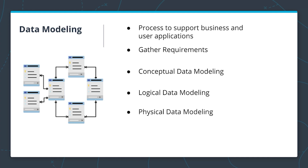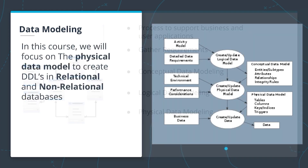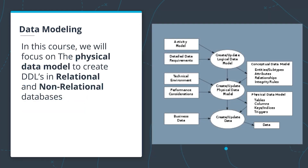From there, physical data modeling is done, transforming the logical data model to the database's data definition language, or DDL, to be able to create the databases, the tables, and the schemas. Now we need to start writing code. We'll be writing our DDLs to create tables in the way that the database understands. Every database does this about 99% the same, but always with a few tweaks — you'll need to Google when working with a new database. A DDL, again, stands for data definition language. In this course, we're going to focus on the physical data model to create DDLs in relational and non-relational databases.